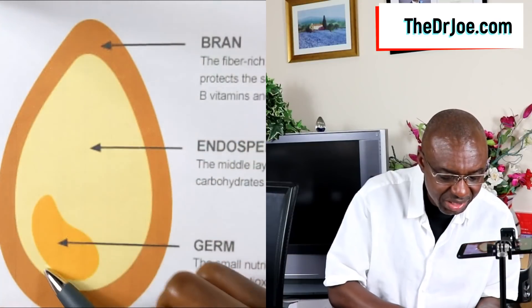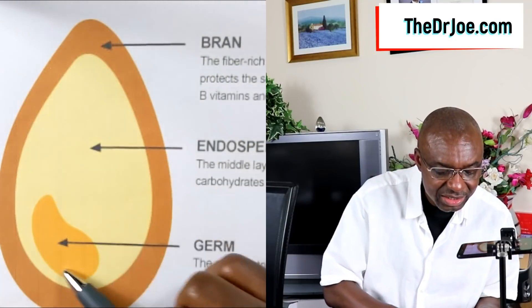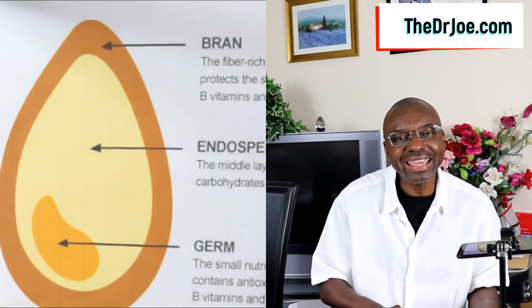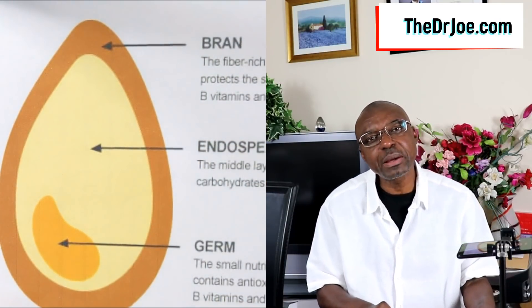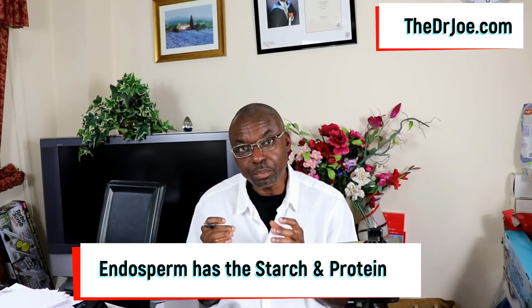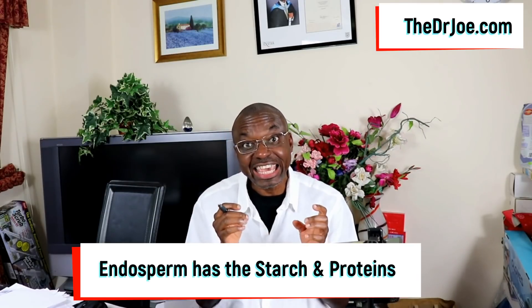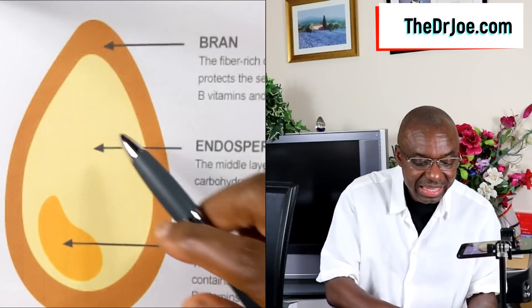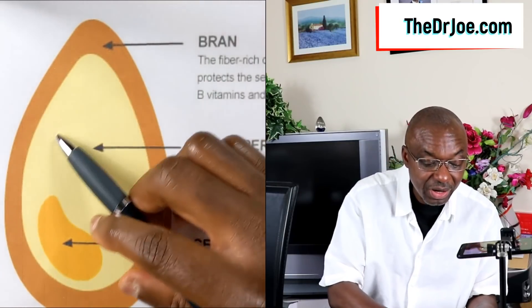That's layer number one. Layer number two is called the endosperm. In the endosperm we've got the starch and we've also got the protein. In a grain like quinoa that has a good amount of protein, you're going to find it in the endosperm.